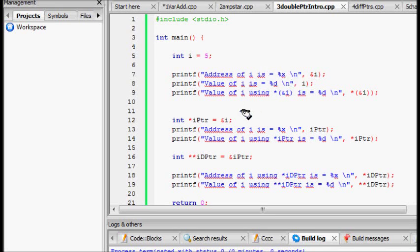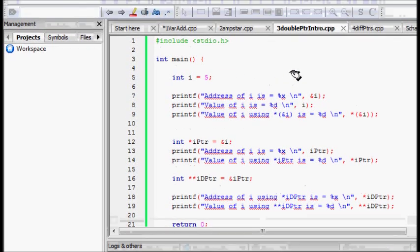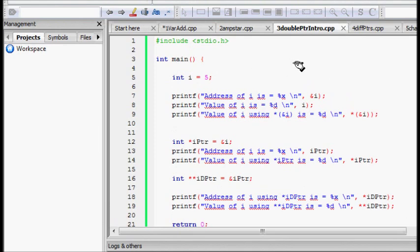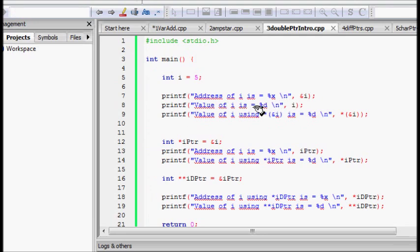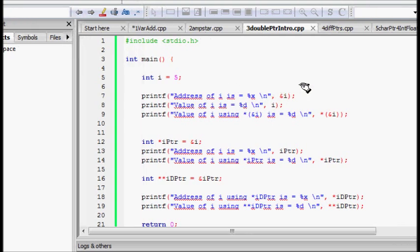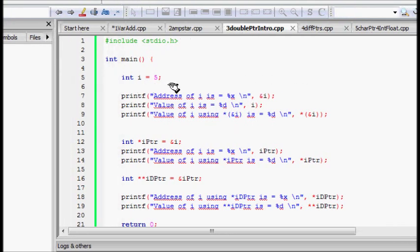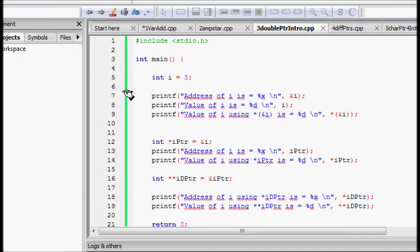In lecture 3 of pointers in C, we will learn about double pointers, just an introduction. So double pointers in fact make us afraid, isn't it? Pointers itself is such intimidating. So what are double pointers doing here?